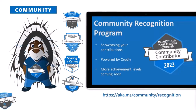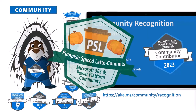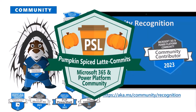Once you contribute, we want to recognize you for the amazing work you're doing. We'll have some fun this season — including a new PSL badge, pumpkin spice commits, thematic badges, Oktoberfest around the corner, and the season of giving. Be sure to opt in at aka.ms/community/recognition. It's absolutely free, and we're excited to make the recognition program more fun this season.